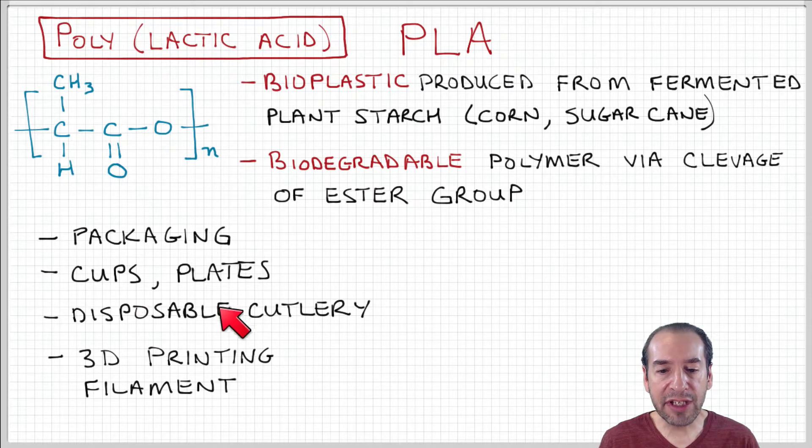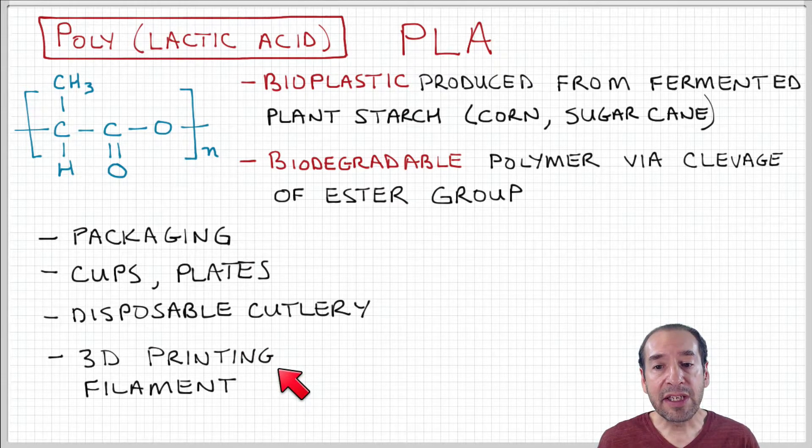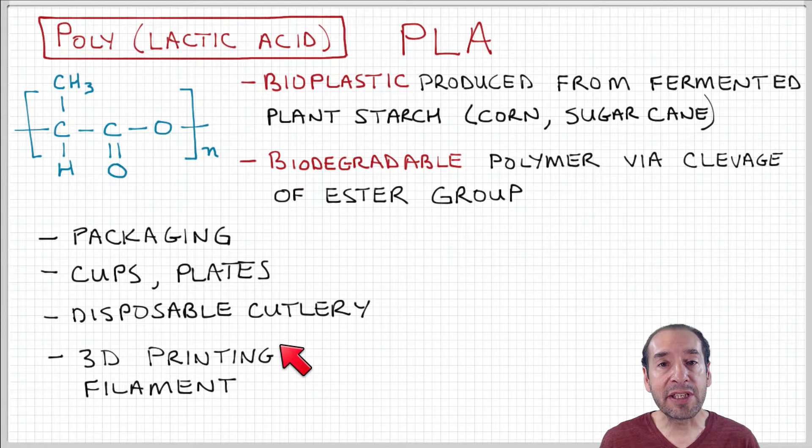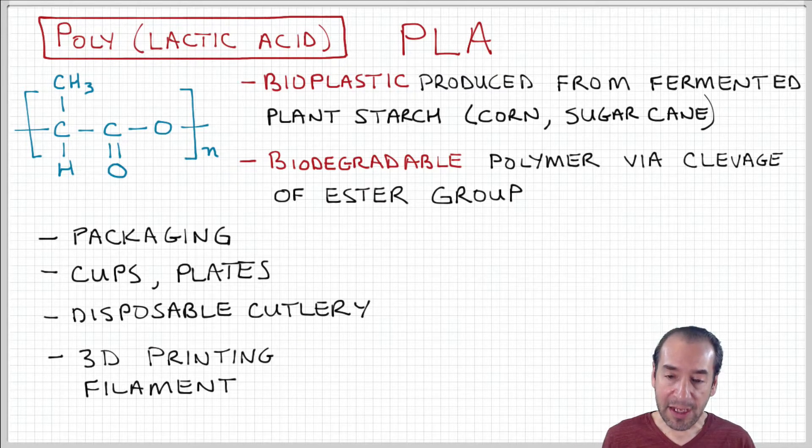PLA is also used a lot as a filament for 3D printing because, as we'll see later, it's an example of a glassy polymer. It has thermal properties that are very compatible with the 3D printing process.